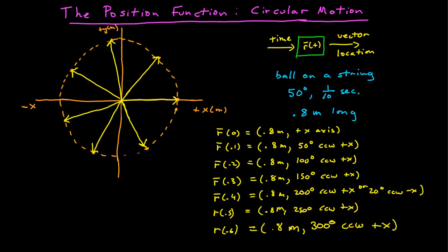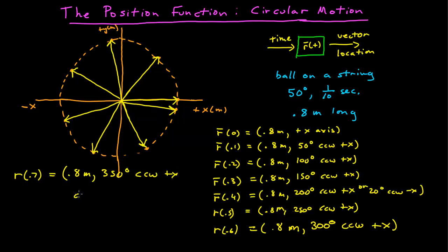50 degrees later, we're here. R at 0.7 seconds has a magnitude of 0.8 meters and is 350 degrees counterclockwise from positive x — or negative 10 degrees clockwise from positive x. Both would be perfectly legitimate directions.